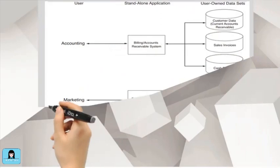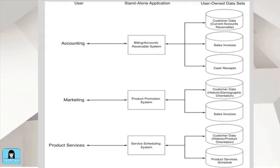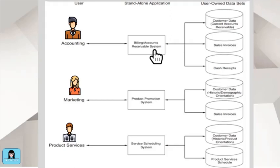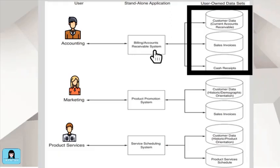Let's use a diagram to better understand the Flatfile model. The diagram shows three related departments: accounting, marketing, and product services. Accounting uses a billing accounts receivable software to process data and generate information about customers and their receivable balances, sales invoices, and cash receipts. The data are stored on several databases that are not linked to the databases of other departments.